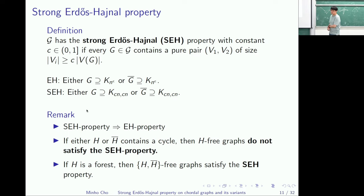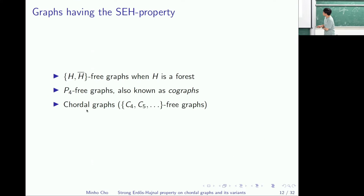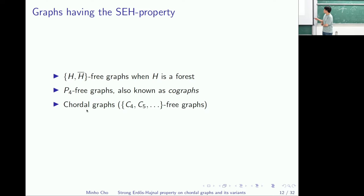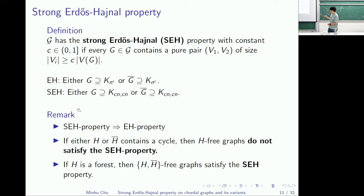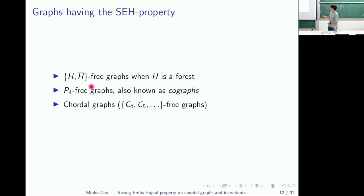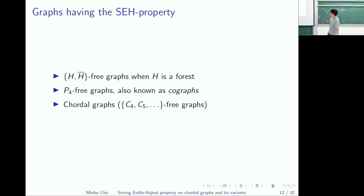Here are some graph classes with the strong EH property. The first line is forbidding a forest and its complement. P4-free graphs also satisfy strong EH, since the complement of P4 is itself. And it can be shown that chordal graphs — meaning every cycle of length at least four has a chord — also have strong EH.